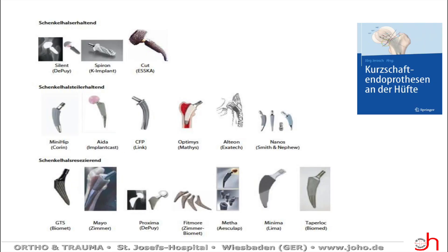What does this mean for the design of the prosthesis? In the first row, we have proximal cutting neck retention prostheses — we have already seen pictures of types like the Silent or Spiron prosthesis. On the bottom line, these are neck resecting prostheses like the FITMOS stem. And in between, we have other types with partial neck preserving or partial neck resecting technique, where the philosophy of anchoring is most likely a calca-guided philosophy.